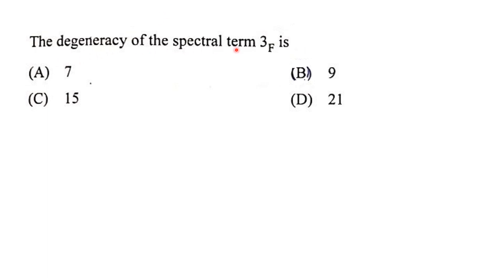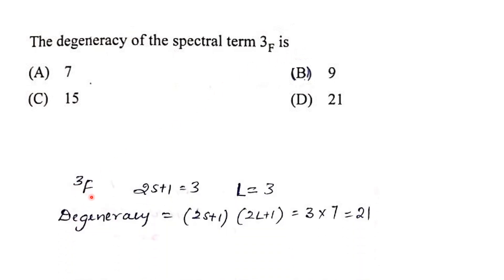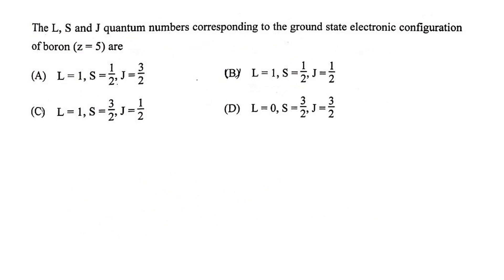The degeneracy of the spectral term ³F: here multiplicity 2S+1 = 3 and for an F orbital, L = 3. Degeneracy = (2S+1)(2L+1) = 3 × 7 = 21. Therefore the answer is 21.